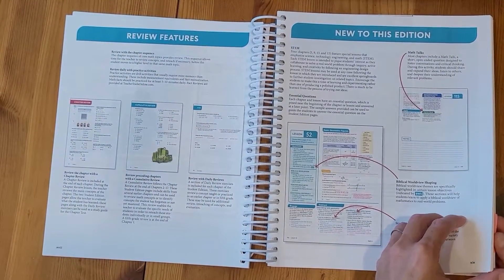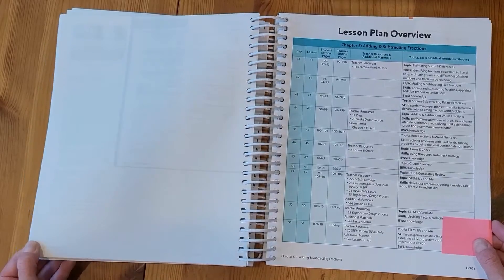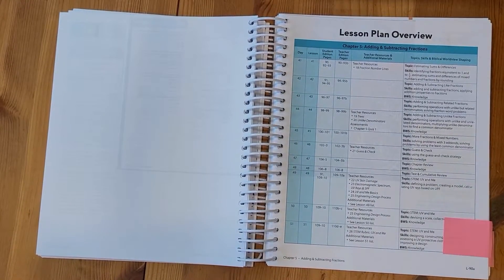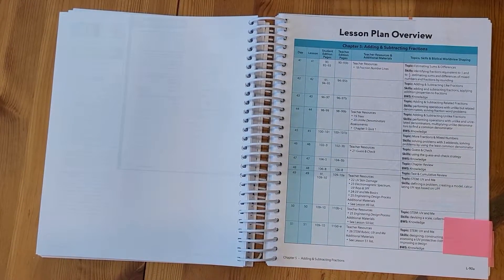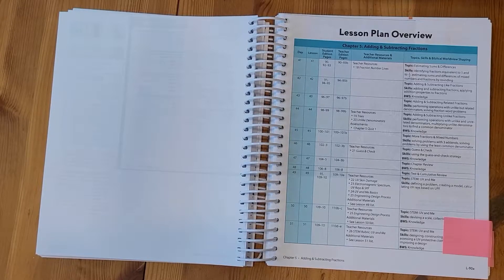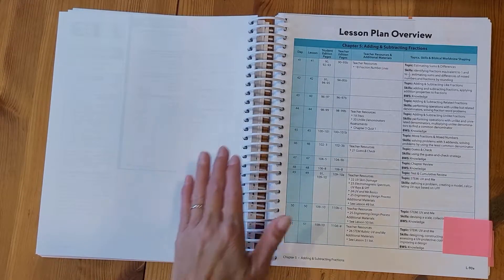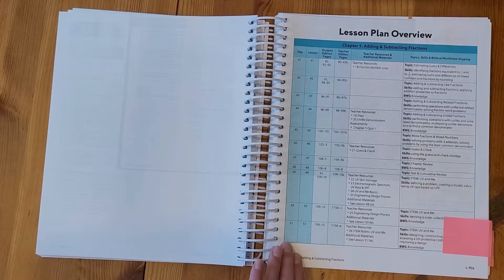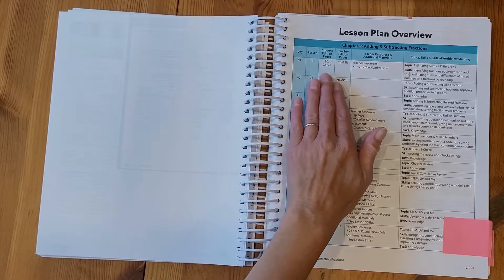I'm going to go ahead now and flip ahead and we're going to take a look at chapter five. At the beginning of each chapter there is a lesson plan overview. This page will tell you which lesson numbers we're on.